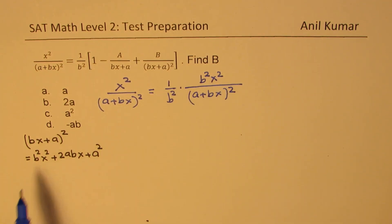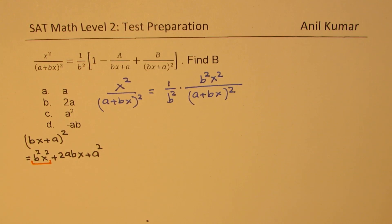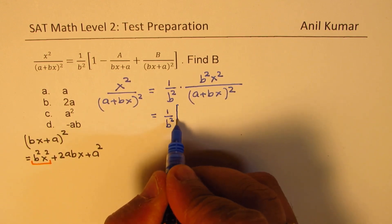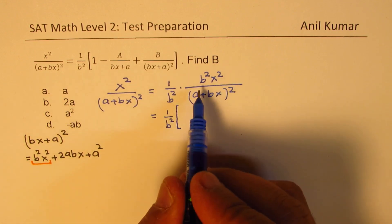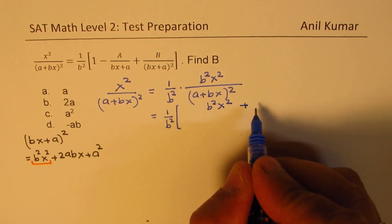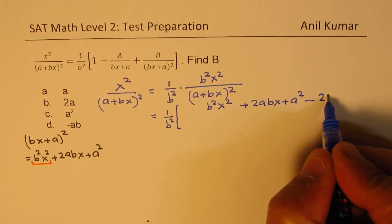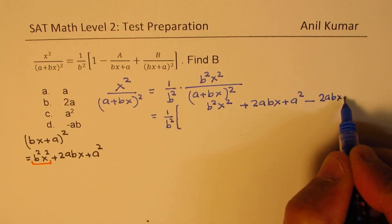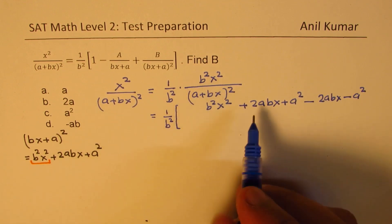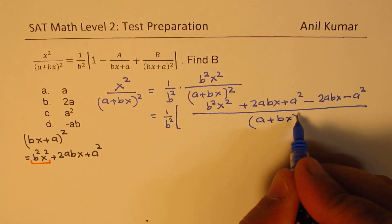We already have b squared x squared. We want the rest, which is 2abx plus a squared. So we add 2abx plus a squared, and we also subtract the same term — 2abx minus a squared. We have added and subtracted this term, making the numerator a perfect square, with (a plus bx) whole squared in the denominator.